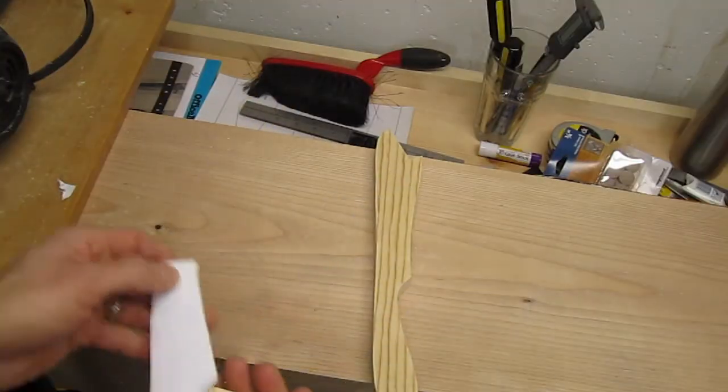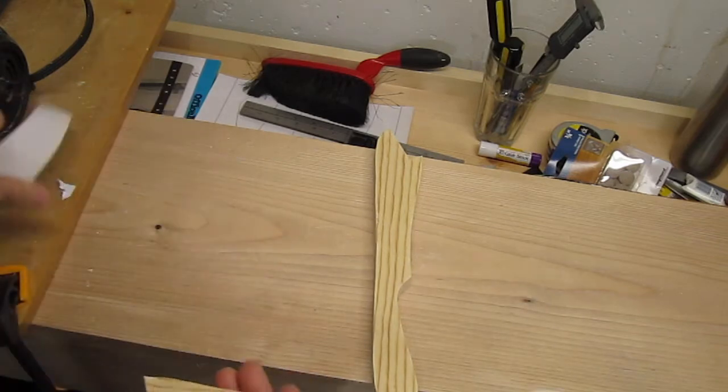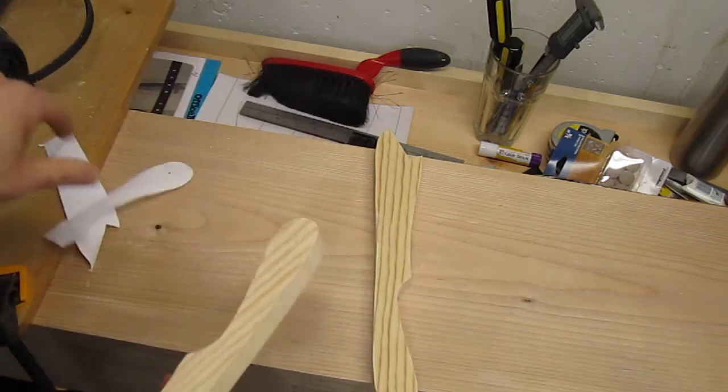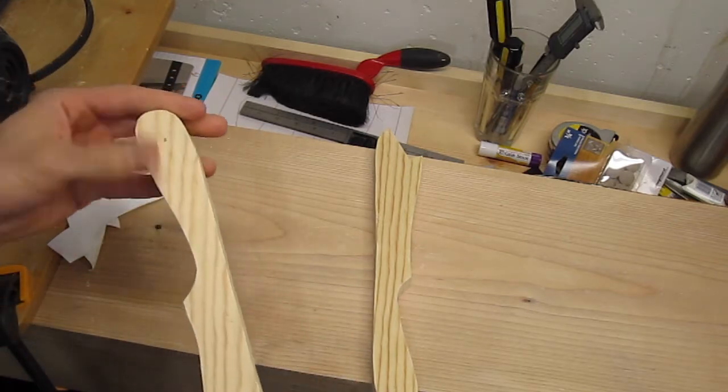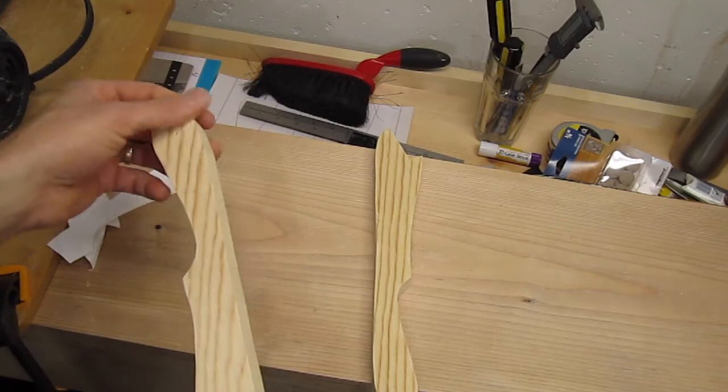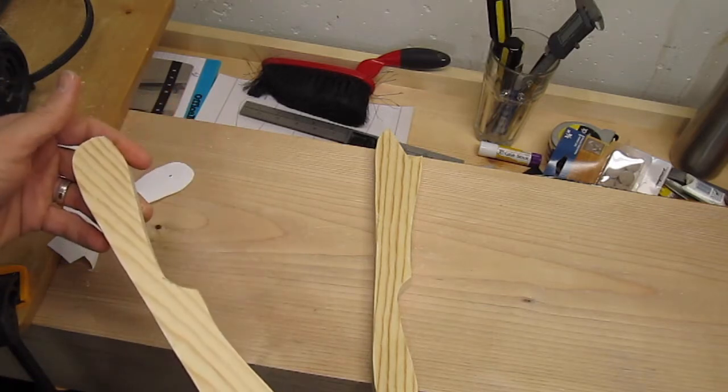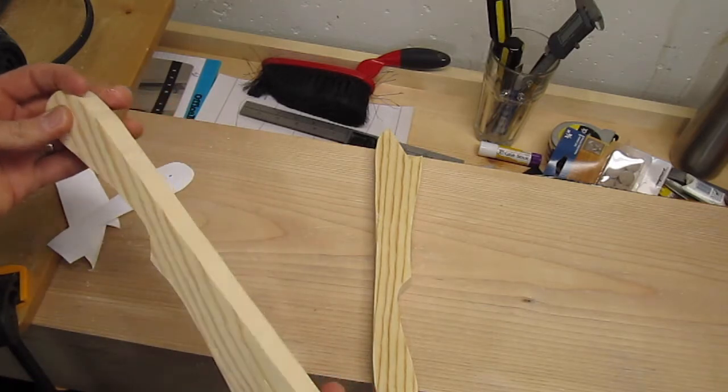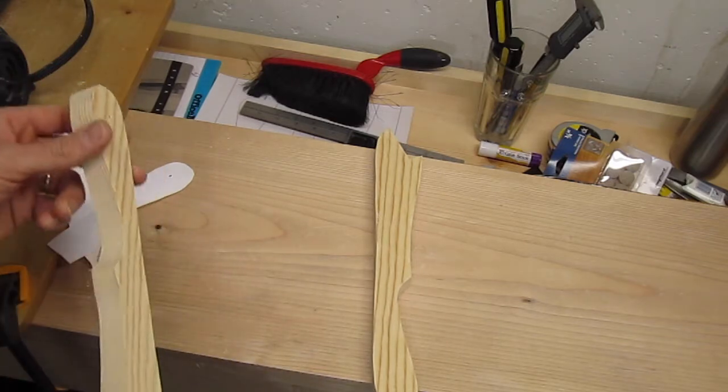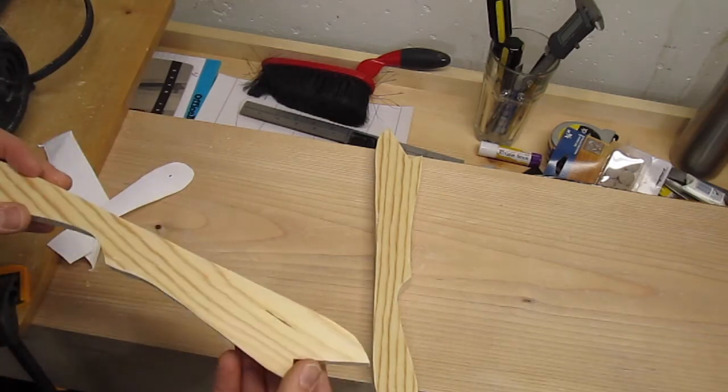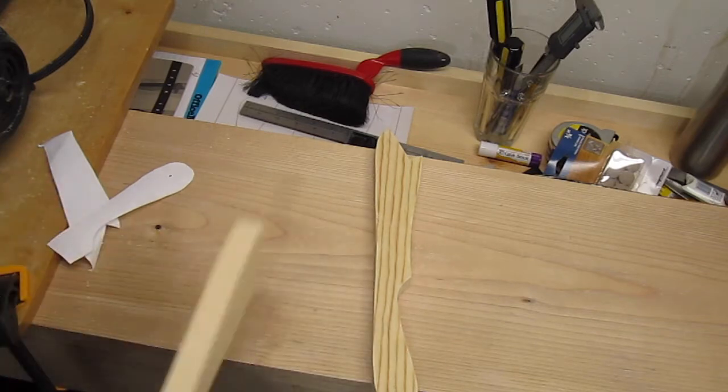There we go that was pretty easy. It's kind of fun using the scroll saw. You get a lot of stuff done really fast. So I think now I just need to kind of even out these edges. I think I'll bring down the router and put a round over bit on it and go over all these edges except for where I'm actually going to be pushing stuff.